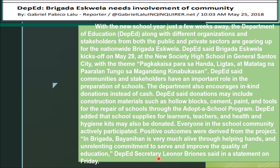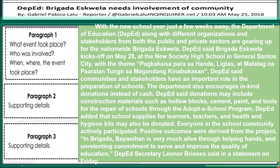This is the correct one. Paragraph one answers: what event took place, who was involved, and when the event took place. Paragraph two is supporting details, and paragraph three is another supporting detail. You understand, kids? That's good.